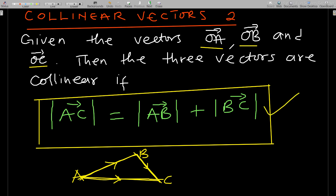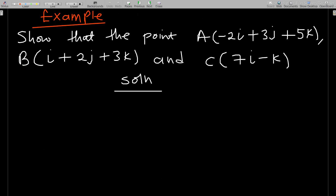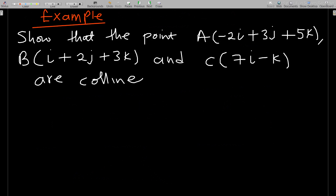Copy down the relation and let's take an example and work on it. Show that the points A = −2i + 3j + 5k, B = i + 3j + 3k, and C = 7i − k are collinear.